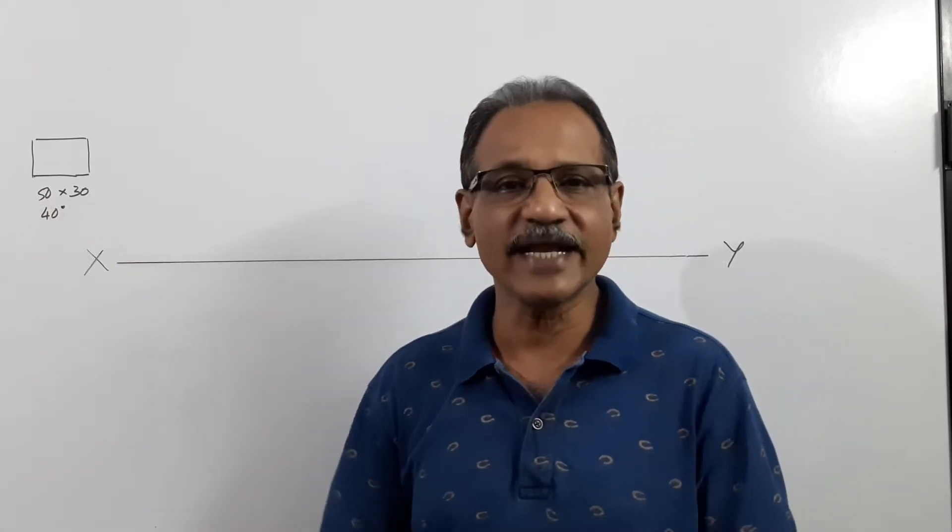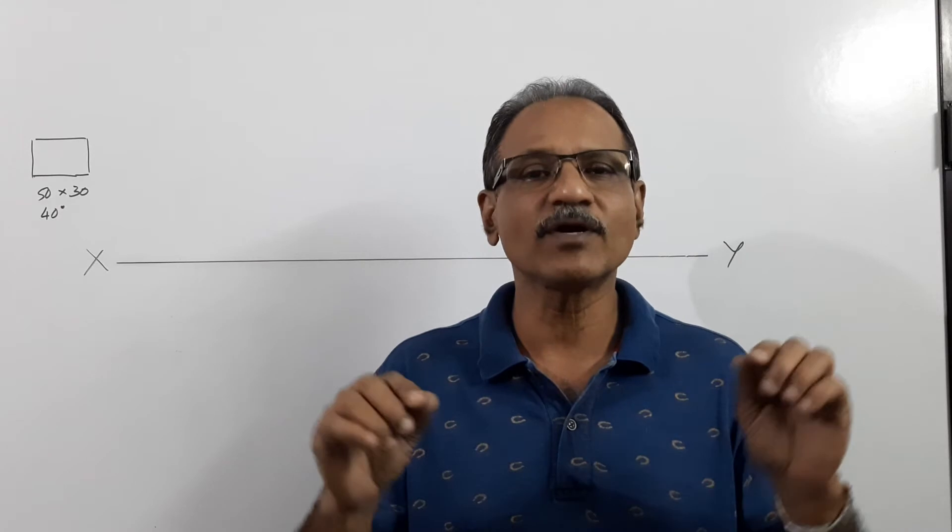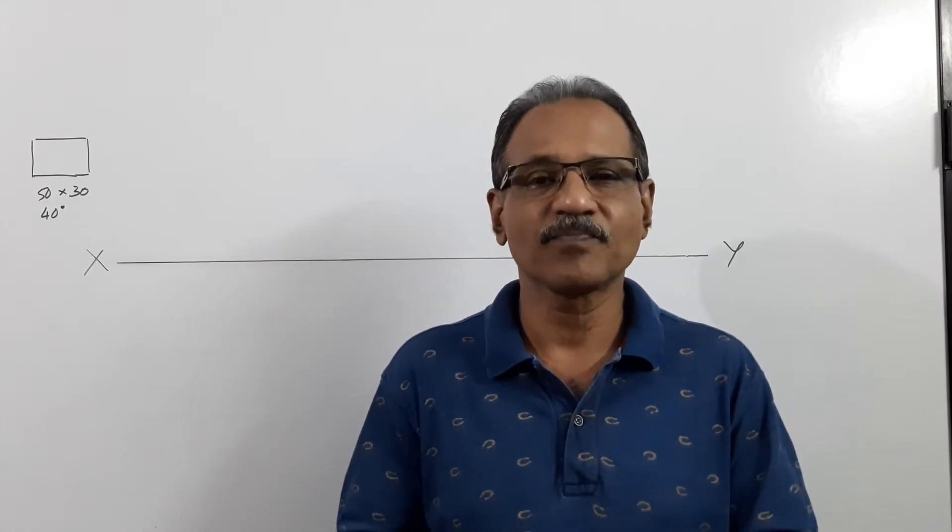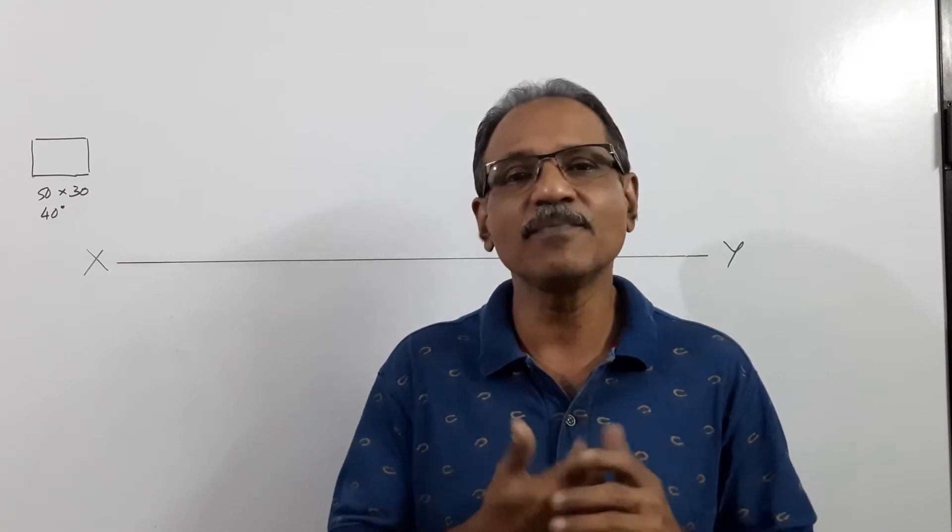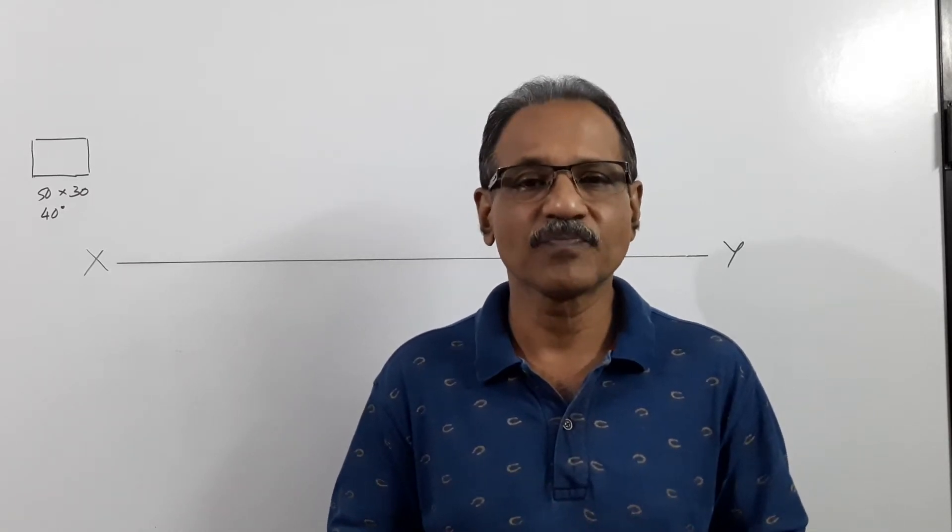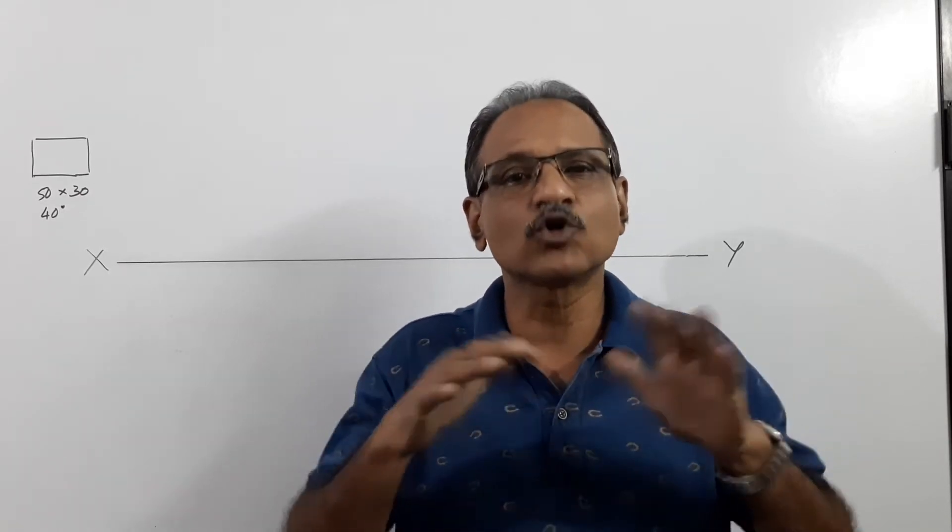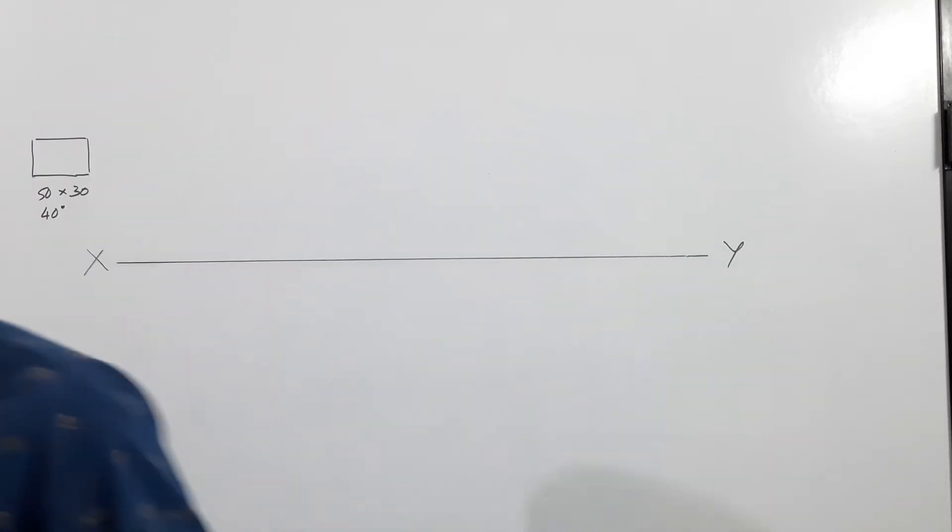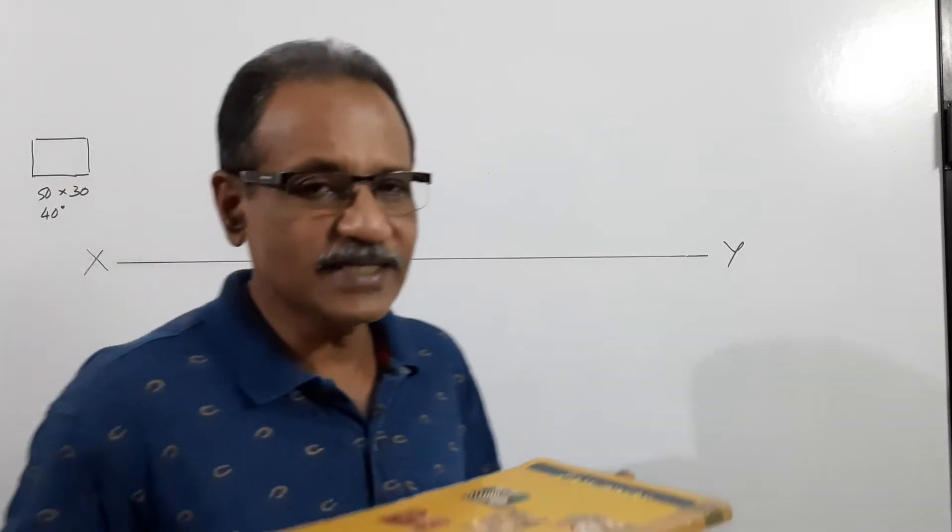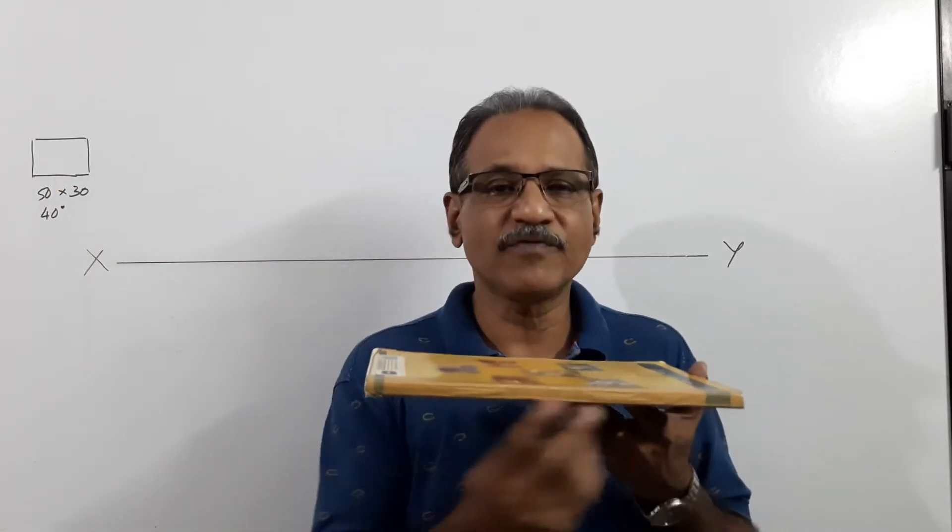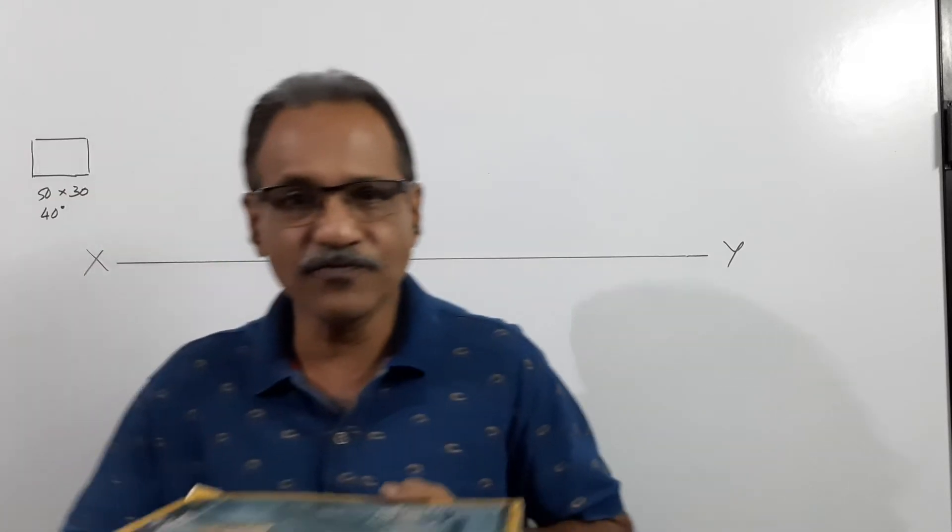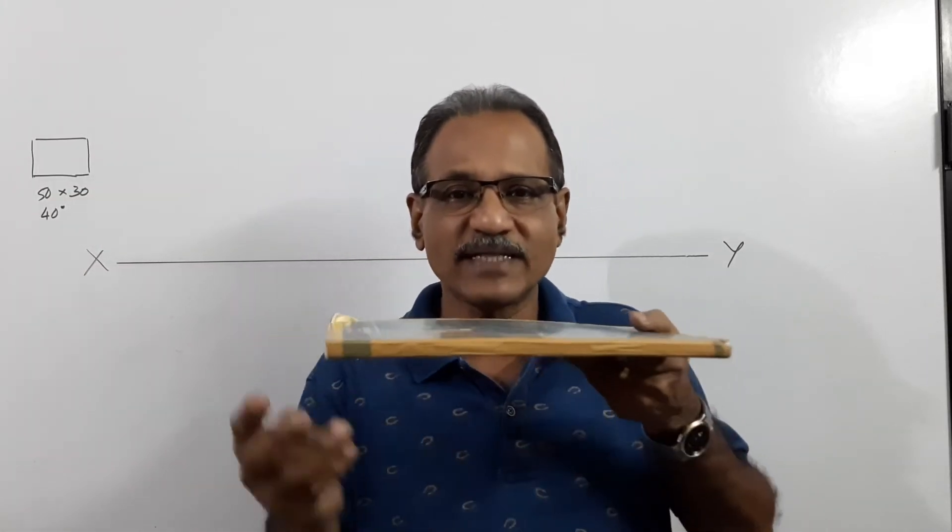A thin rectangular lamina 50 mm by 30 mm rests on HP on a shorter side with the larger side making 40 degrees to VP. Draw the projections when the top view is a square of 30 mm size. If this is a lamina 30 mm by 50 mm, if this is a lamina 50 mm by 30 mm.